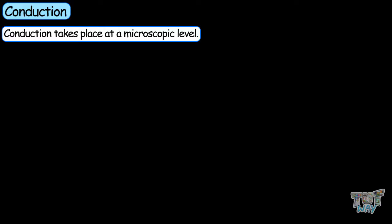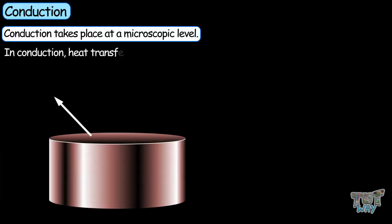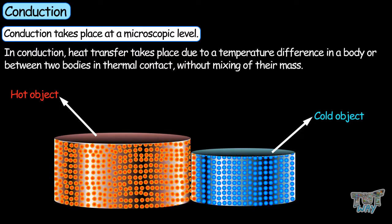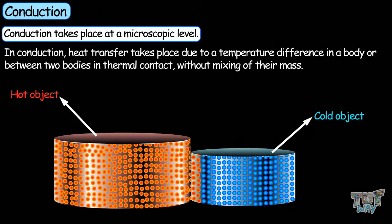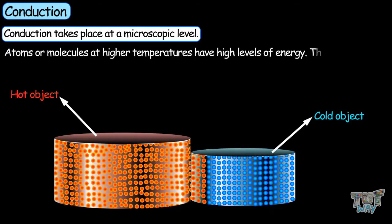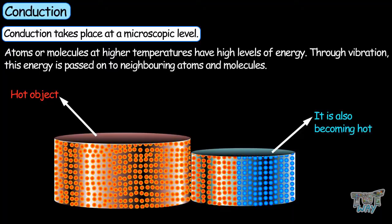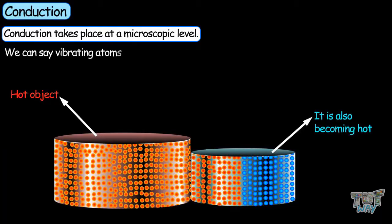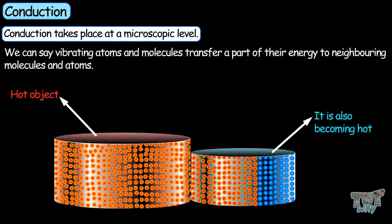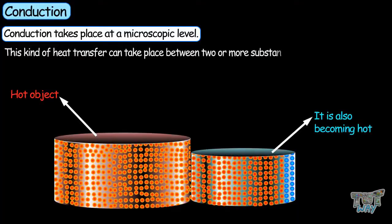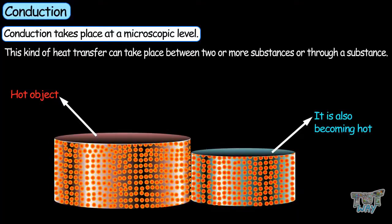Conduction takes place at a microscopic level. In conduction, heat transfer takes place due to a temperature difference in a body or between bodies in thermal contact, without the mixing of their mass. Atoms or molecules at higher temperatures have high levels of energy. Through vibration, this energy is passed on to neighboring atoms and molecules, transferring a part of their energy to neighboring molecules and atoms. This kind of heat transfer can take place between two or more substances or throughout a substance.